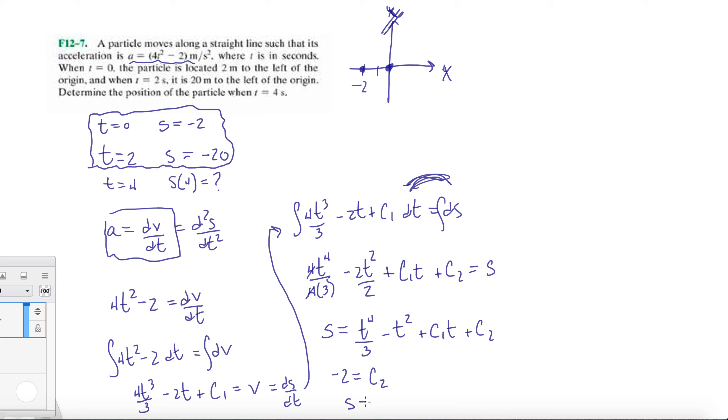So now when we write the function again, the position function, we have s equals t to the 4th divided by 3 minus t squared plus c1t minus 2. And then we're going to do the same thing again. We're going to plug in at t equals 2, this is equal to negative 20. So let's jump to the top here since we're almost done. So minus 20 equals 2 to the 4th divided by 3 minus 2 squared plus c1 times 2 minus 2, and that's all equal to negative 20. From this, we should get c1 is equal to negative 9.66, roughly.